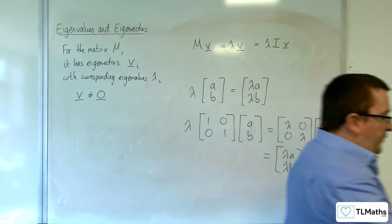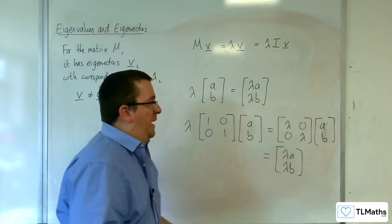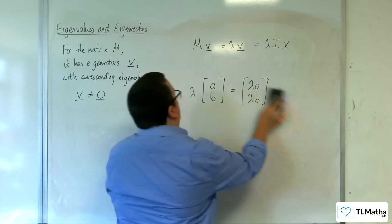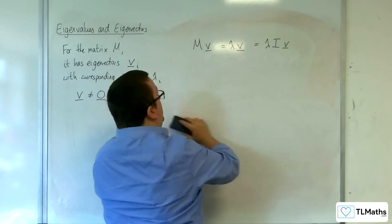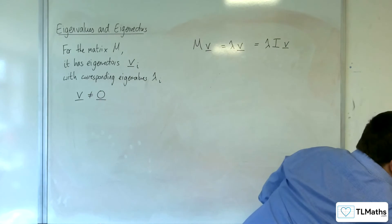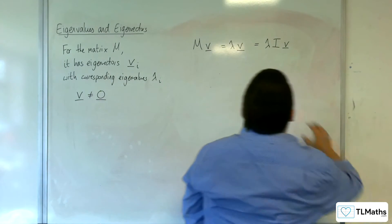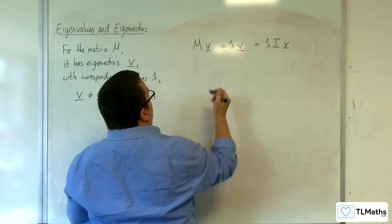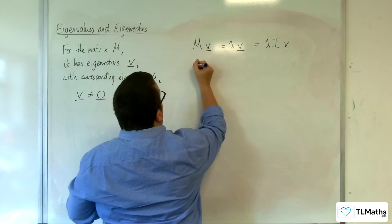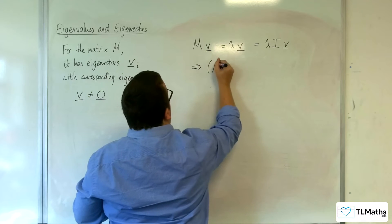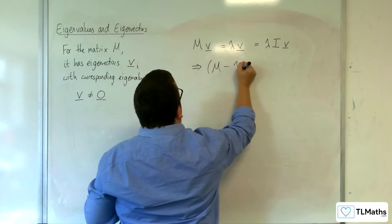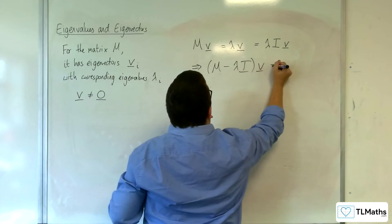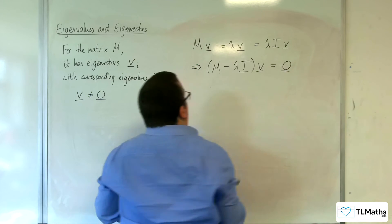Once you're convinced of that, you can rearrange. If you subtract lambda·I·V from both sides and factorise, you can write this in the form (M − λI)V = 0.